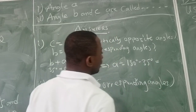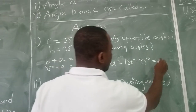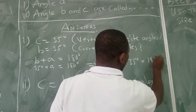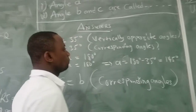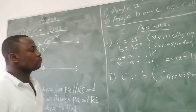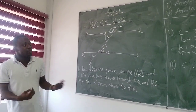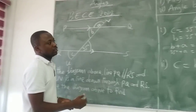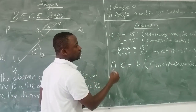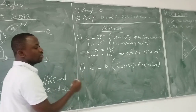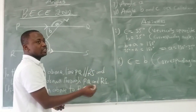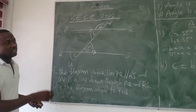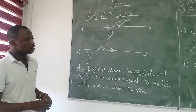So we conclude that angle A is equal to 180 degrees minus 35 degrees. If it is section B, we conclude that the angle A is equal to 145 degrees. If it is section A, just look through the options and then select the correct one.